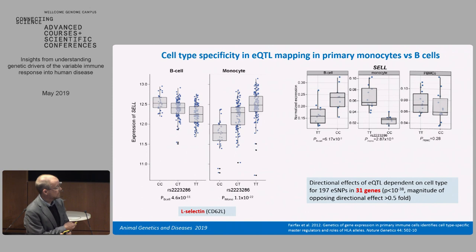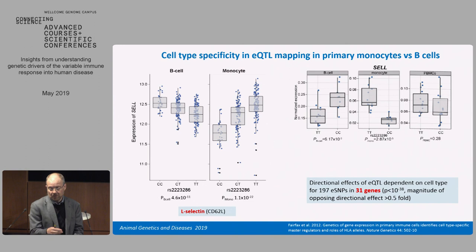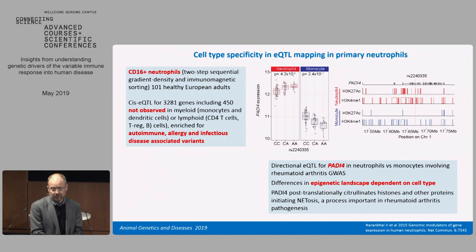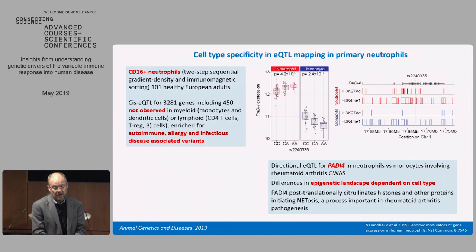If you look in a mixed cell population — here qPCR data for the two different cell types and also for peripheral blood mononuclear cells — in the PBMCs you find no difference based on allele. So there's the potential to be confounded. These directional eQTLs are relatively rare, but with a high degree of statistical confidence we were finding them in over 30 genes even in this relatively modest study. We've also looked at neutrophils — a hard cell type to work with — and found evidence of local associations involving over 3,000 genes, a significant proportion of which are not observed in other cell types.